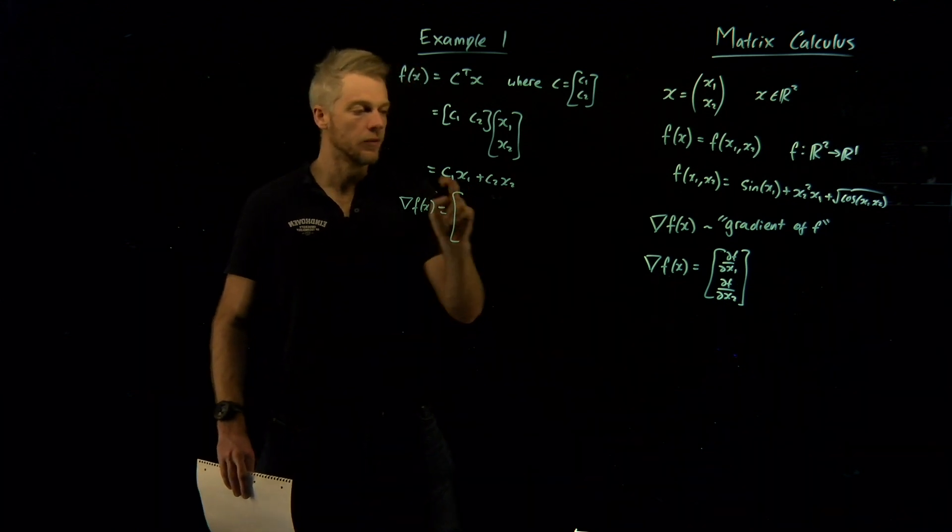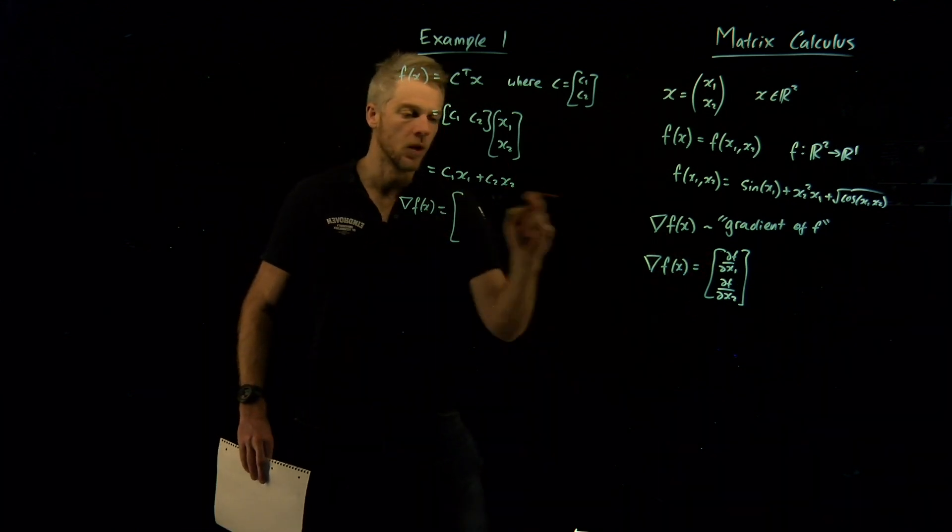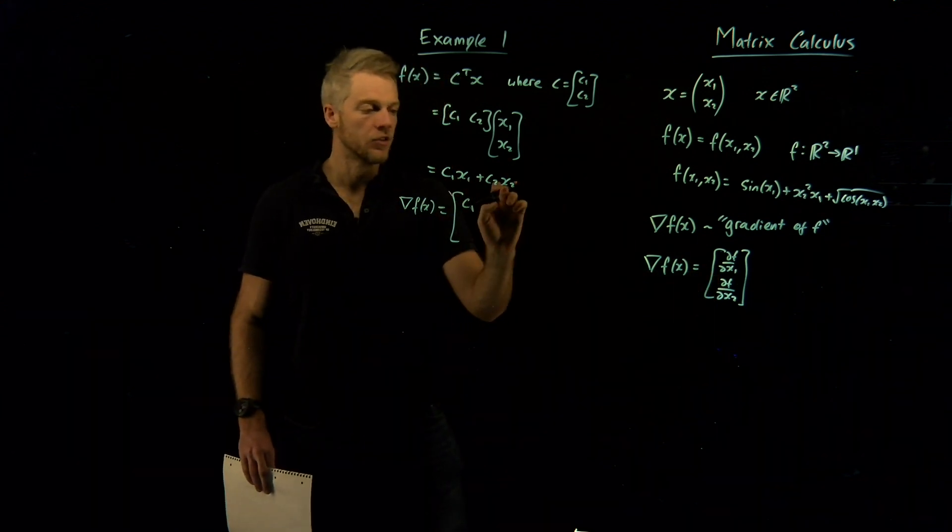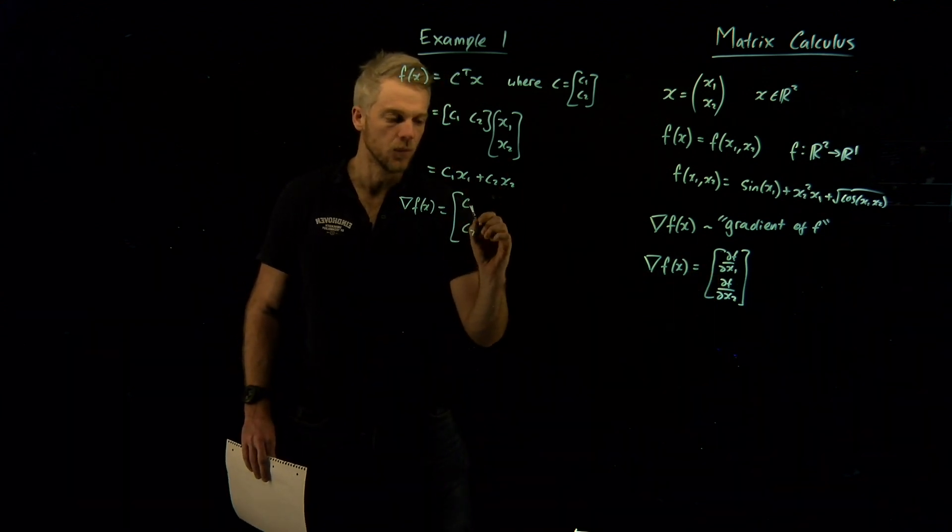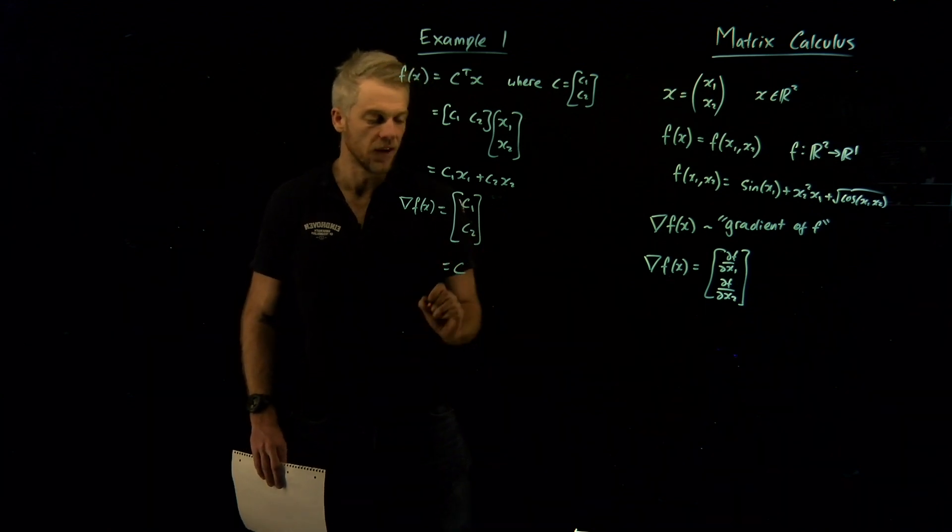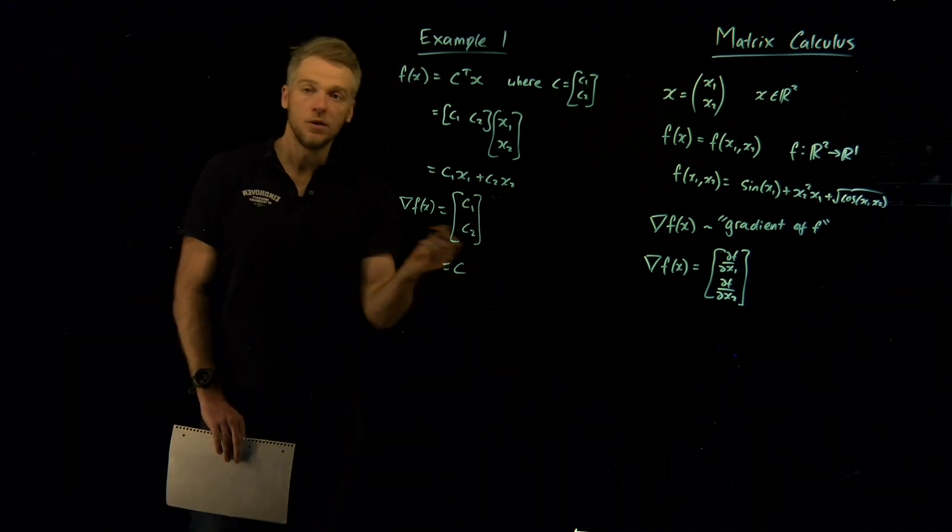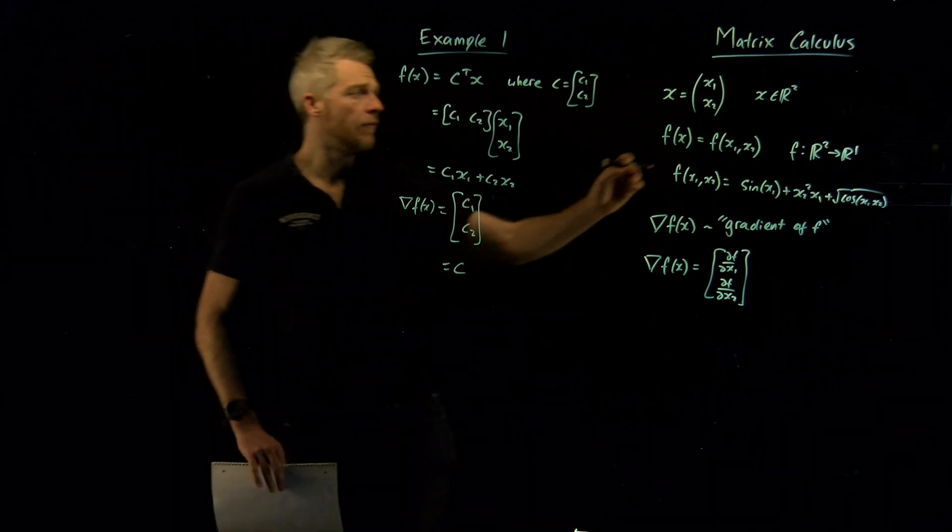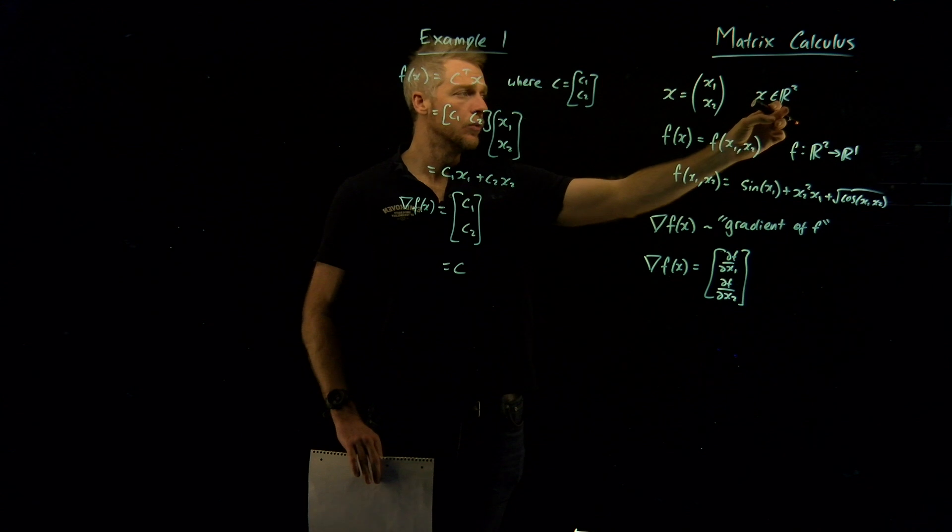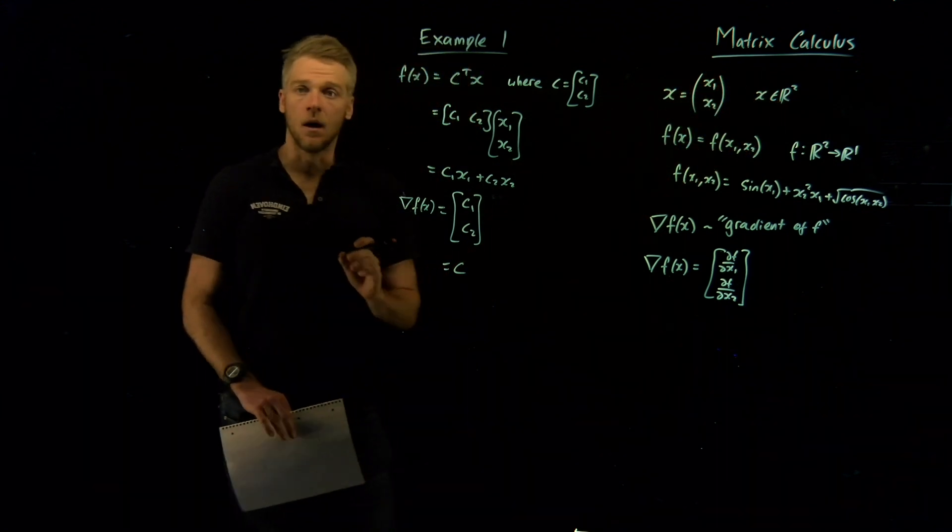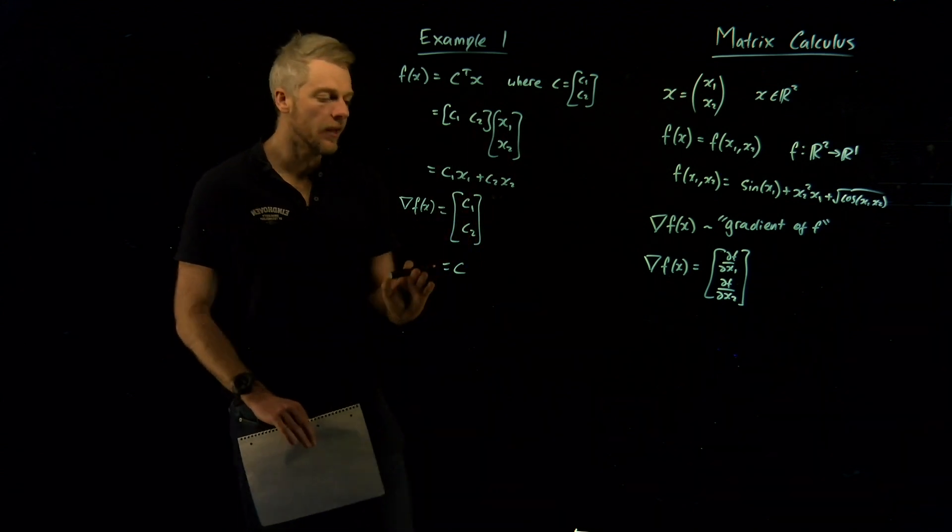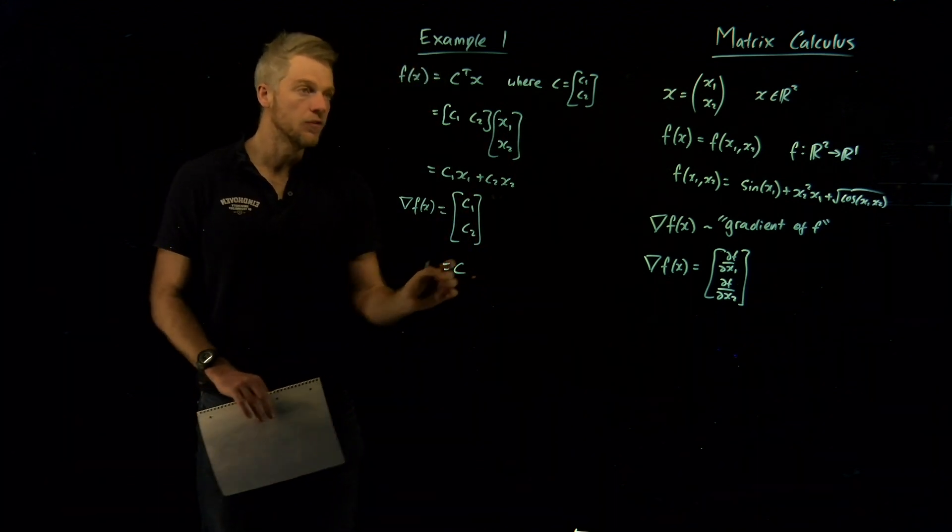And let's see if we can find the gradient of f using the definition we've got here. Well, if I were to take the partial derivative of this with respect to x1, then this will just be c1. And if I were to take the partial derivative of f with respect to x2, that would just be c2. And so we can say that this is actually just your c vector that you started with. That's one useful identity here. And by the way, so far I'm clearly showing examples with x in R2, but really this generalizes to x in Rn, by the way. So this is more out of simplicity, but realize that this generalizes.